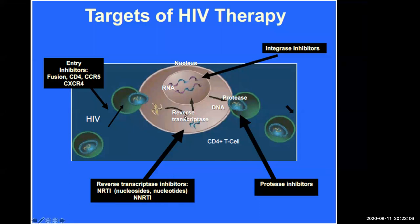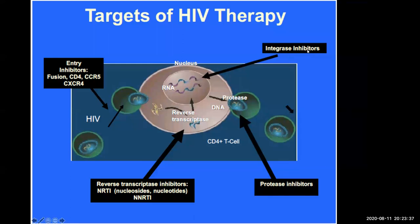Double-strand DNA is then transported into the nucleus of the cell and integrated into our DNA. So the viral DNA is inserted — integrated — into our DNA as human beings. The process of integrating the viral DNA with human DNA is done by an enzyme called integrase. The drugs that block that enzyme are called integrase inhibitors, and there's only one that you need to know: dolutegravir.